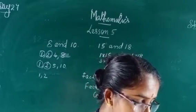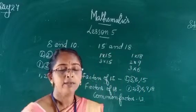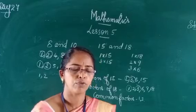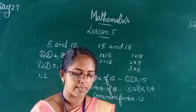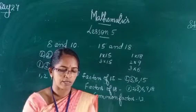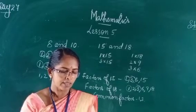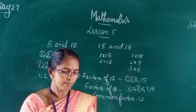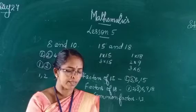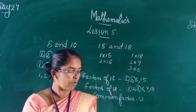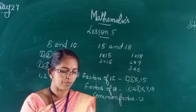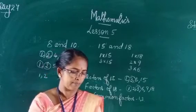Now for Exercise 5.1, page 170. The first question: the multiplication story of 12 is given as an example. Similarly, write the multiplication story for the given numbers. The multiplication story covers: 1 into 12, 12 into 1, 2 into 6, 6 into 2, 3 into 4, and 4 into 3.